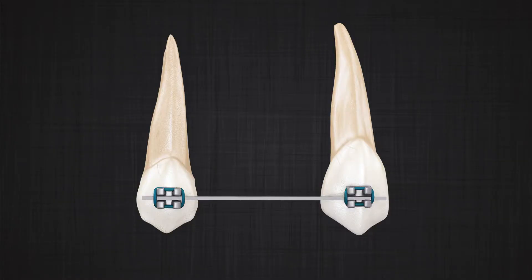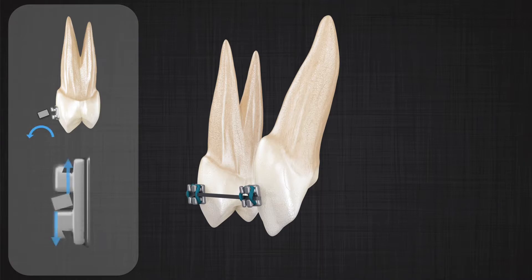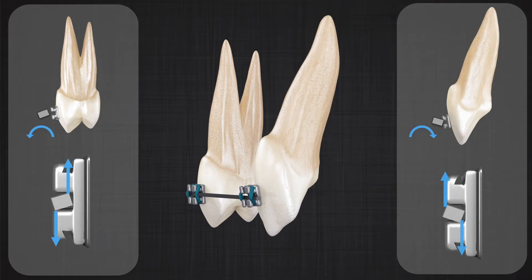This is not true if you are using a rectangular wire. If you are using a section of rectangular wire between two well-aligned adjacent brackets, the wire will sit passive. If we are introducing a twist in this wire, both adjacent brackets will receive equal and opposite moment. Regardless of magnitude of the twist, the moment on adjacent teeth will always be equal and opposite.